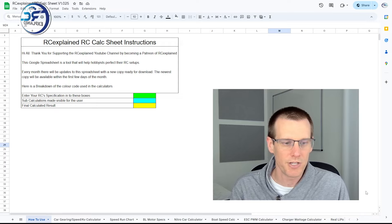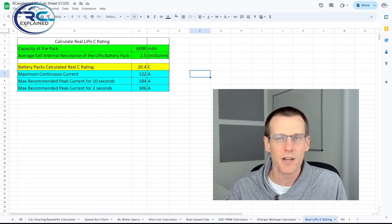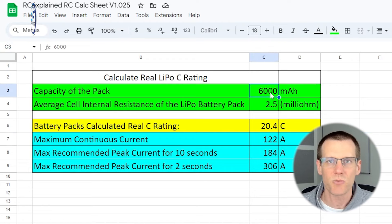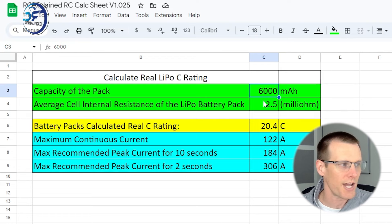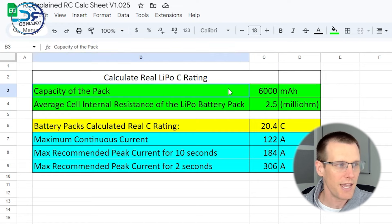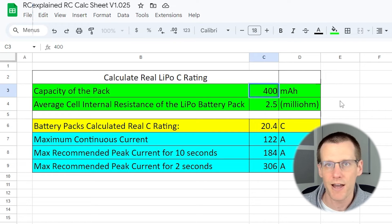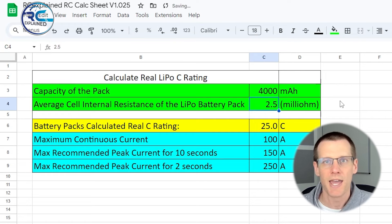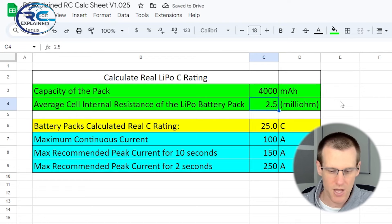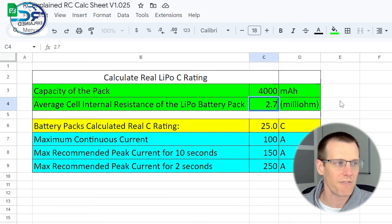Let's now jump over to the real LiPo C rating calculator and start manipulating these values so we can actually get the results we're after. So the capacity of the pack, the last one we did was a 6,000 which had an average cell internal resistance of 2.5 milliohms. Today in our test, we had a 4,000 milliamp hour battery pack and the average resistance if you take all 12 cells we measured here today was 2.71.